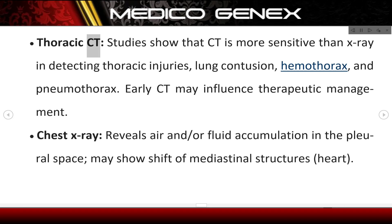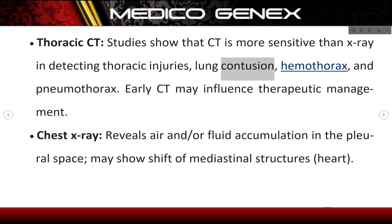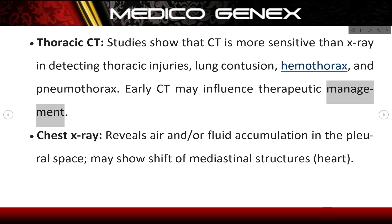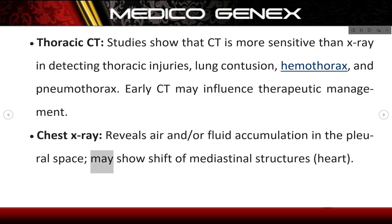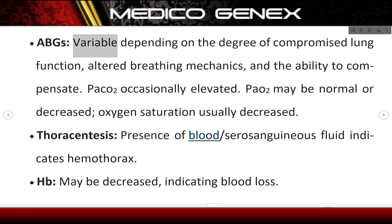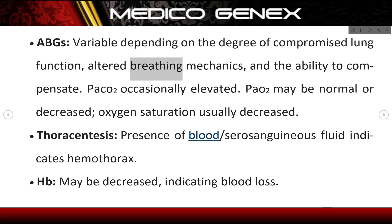Thoracic CT — studies show that CT is more sensitive than X-ray in detecting thoracic injuries, lung contusion, hemothorax, and pneumothorax. Early CT may influence therapeutic management. Chest X-ray — reveals air and/or fluid accumulation in the pleural space; may show shift of mediastinal structures and heart. ABGs — variable depending on the degree of compromised lung function, altered breathing mechanics, and the ability to compensate.